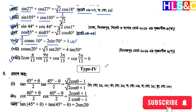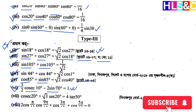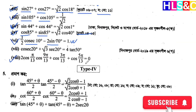Assalamu alaikum. In this tutorial, I will solve from Chapter 8, starting from problem 7. So let's see: Chapter 8, number 8 — it says 2 cos(π/13) · cos(9π/13).